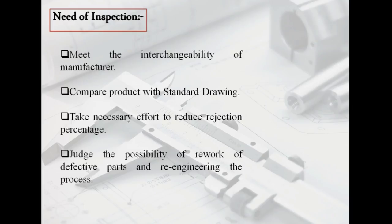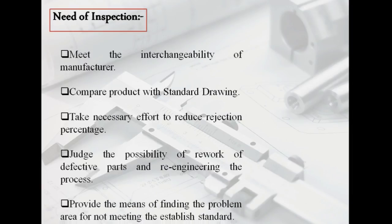Reduce the rejection percentage and possibility of rework - both things are only possible to know due to inspection. Because due to inspection, we have an idea at which place the rejections occur and whether rework is possible or not. Therefore, we prepare before production about the product operation so that we can reduce the rejection percentage or reduce the rework. Our fifth and last need of inspection is to provide the means of finding problem areas for not meeting the established standard.